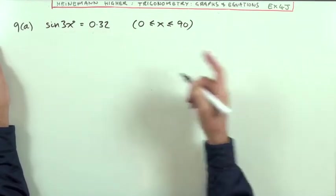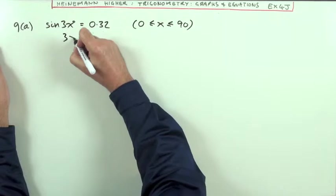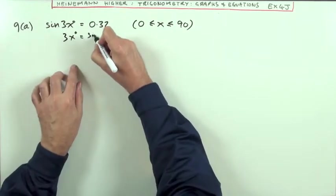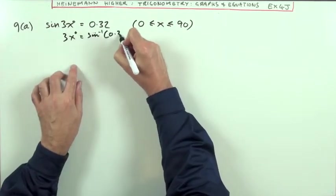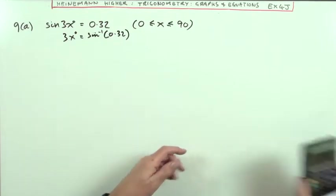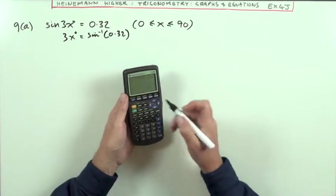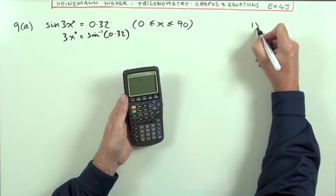For problem 9(a), 3x is the inverse sine of 0.32, which we need to look up. The calculator gives 18.662 degrees, which we'll round to 18.7 degrees and note for placing in the appropriate positions.